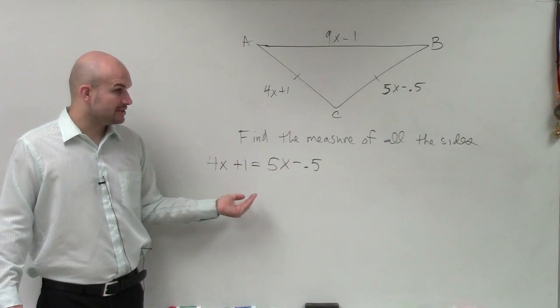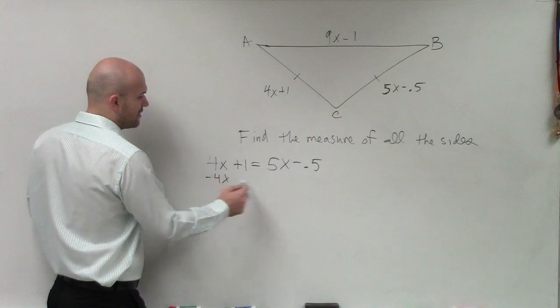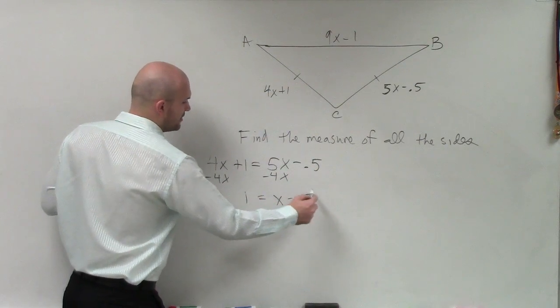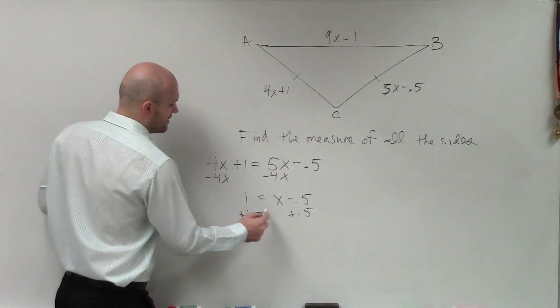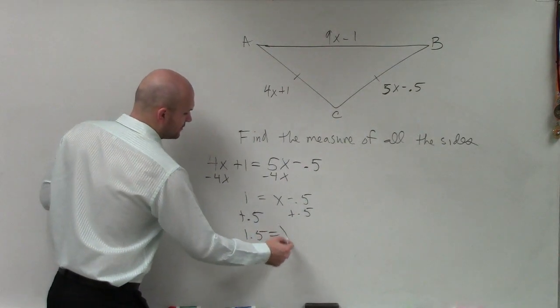Now I have an equation that I can go ahead and solve. So now I just need to solve for x. So I'll subtract 4x. So I have 1 equals x minus 0.5. Add 0.5. Therefore, I have 1.5 equals x.